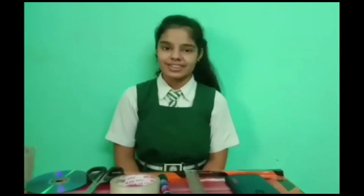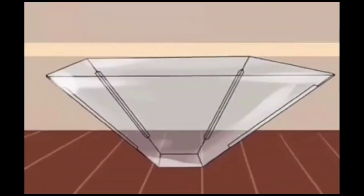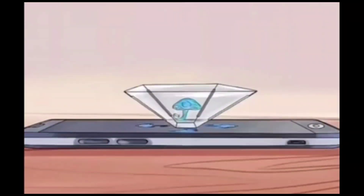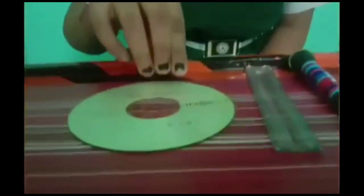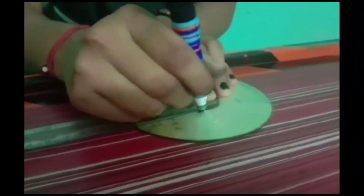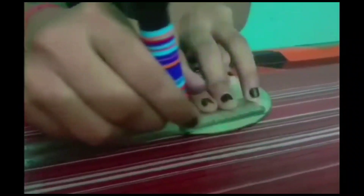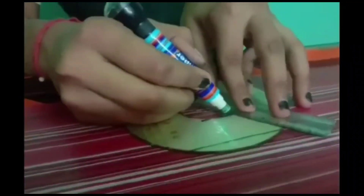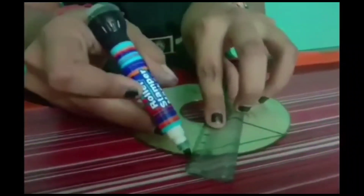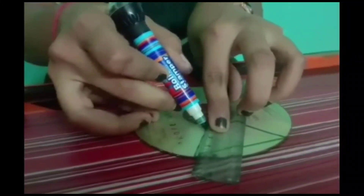Let's see the figure of it. Now let's see the method or construction of the hologram. Take an old CD to make the hologram. Draw a line of 2 cm at the smaller radius side of the CD. Now draw a line of 6 cm at the bigger radius side of the CD. We will now join both lines such that it forms a trapezoid shape.